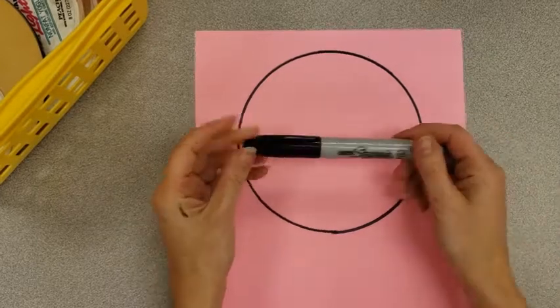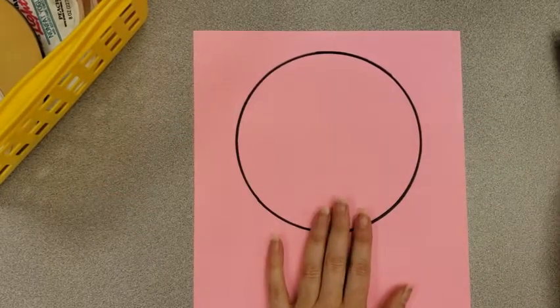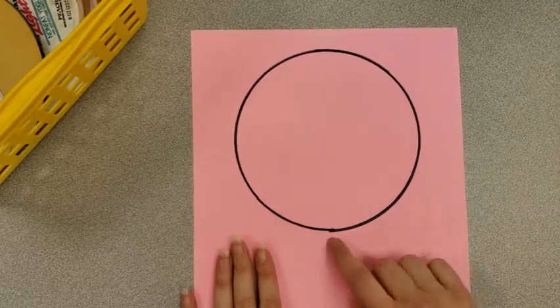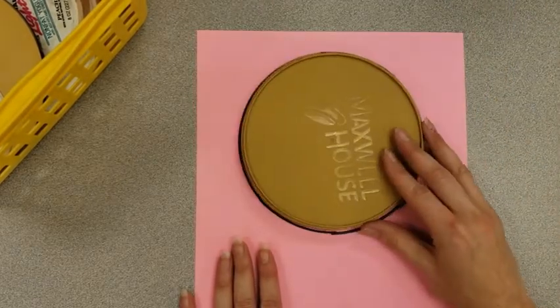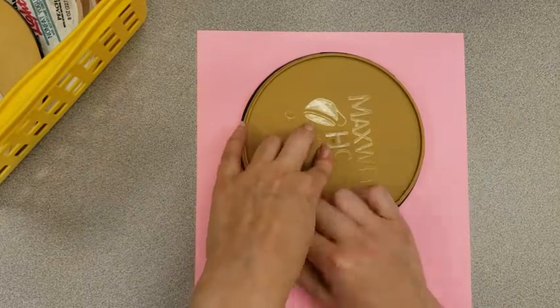Now today I am using Sharpie just so you can see but you guys will be doing this in pencil and if you mess up you can always just erase and then take your circle, put it back, and fix whatever lines became a problem.